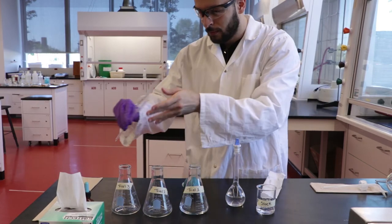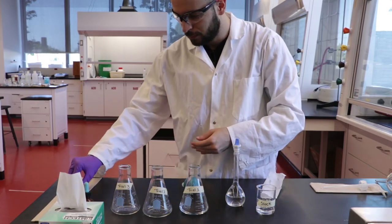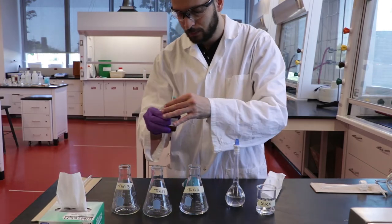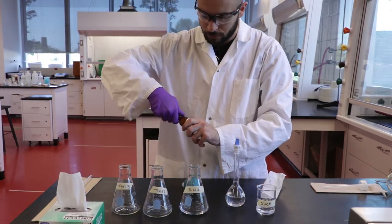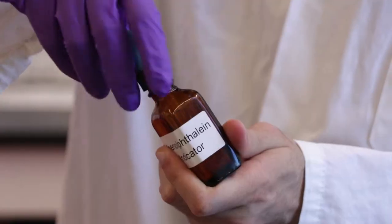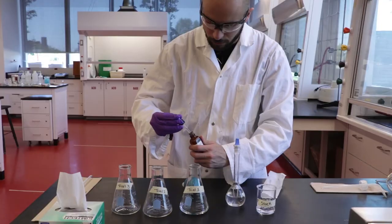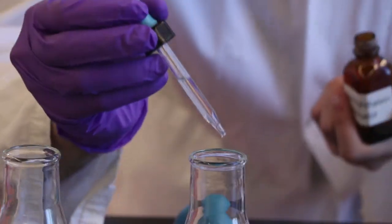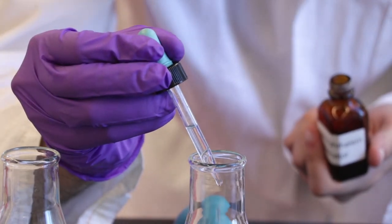Then add two drops of indicator to the vinegar and wash down the sides of the flask with some distilled water using the wash bottle. In this experiment, the endpoint will be detected using phenolphthalein as the indicator, which is colorless in acidic solutions and pink in basic solutions.